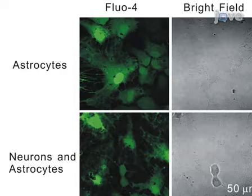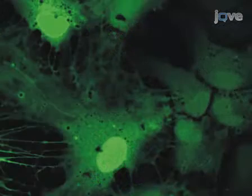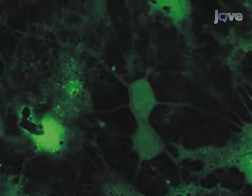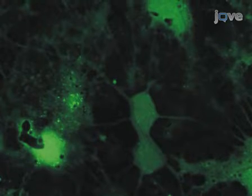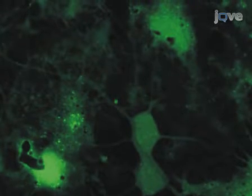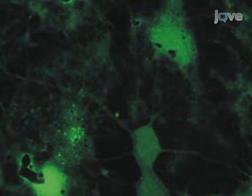These images show Fluo-4 loaded astrocytes and neurons. Astrocytes are flat cells with fine processes, whereas neurons have round cell bodies and thick and long dendrites. Both astrocytes and neurons look healthy and loaded with Fluo-4 properly. Looking at astrocytes by epi or confocal microscopy is useful to confirm healthy cells and proper dye loading. In the regions of the astrocyte closest to the cover glass — regions called the footprint — ATP is observed to cause a calcium increase near the plasma membrane. Hippocampal astrocytes are known to express purinergic receptors, and ATP, when applied to the bath, can cause a global calcium release.